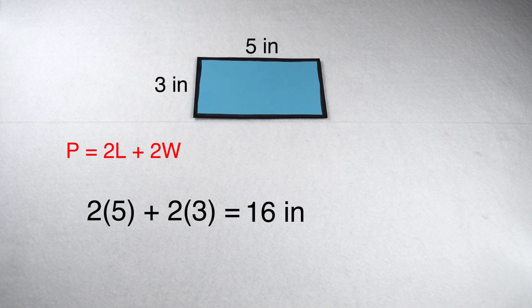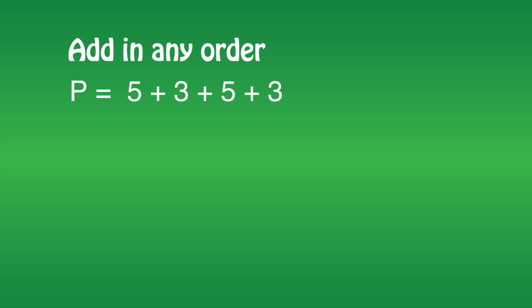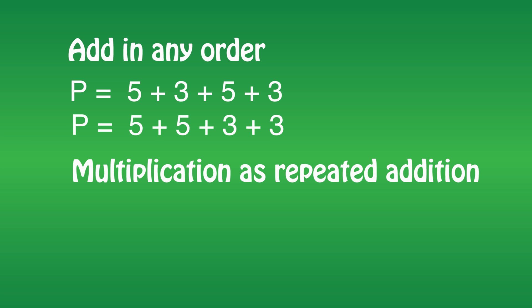These methods come out to be the same for a couple of different reasons. First off, addition is commutative, which means we can add in any order and get the same result. So I could write my addition problem as 5 plus 5 plus 3 plus 3. I also know that multiplication is another way to do repeated addition. So instead of writing it as 5 plus 5, I could rewrite it as 2 times 5, and instead of writing it as 3 plus 3, I could rewrite it as 2 times 3, which brings us back to exactly twice the length plus twice the width.